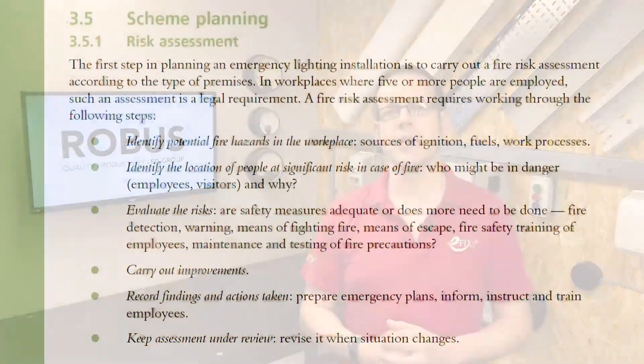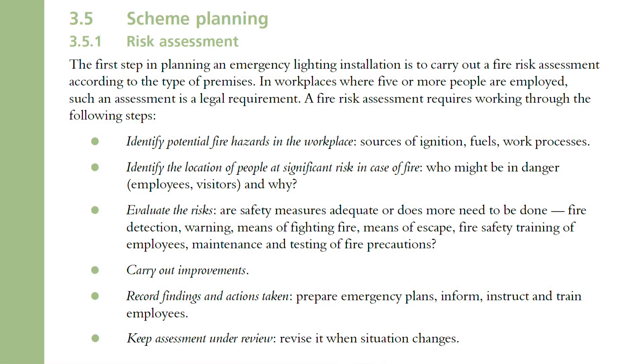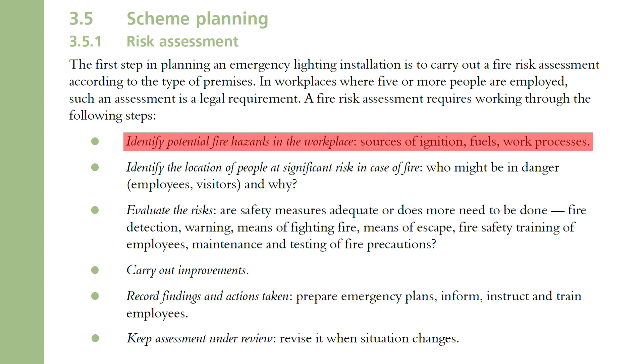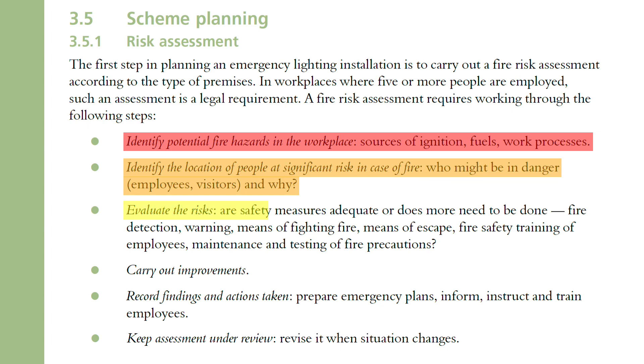First of all we need to figure out how to identify where in a building would need to be classified as a high risk task area. This is done by carrying out a risk assessment, which should be done for the building as a whole but the same process applies to high risk areas as well. The Society of Light and Lighting suggests the following process: identify potential fire hazards in the workplace — sources of ignition, fuels, work processes — and identify the location of people at significant risk in case of fire.